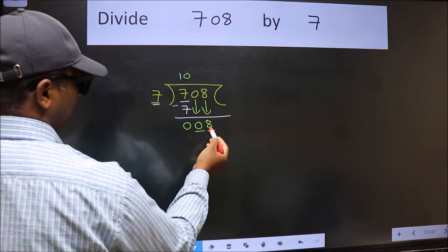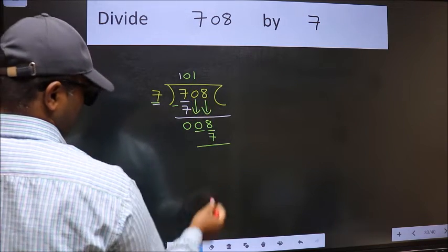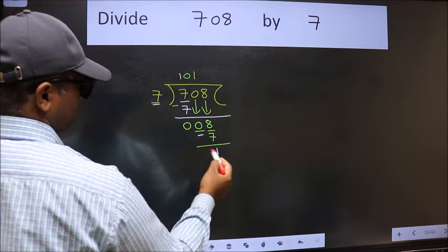Now 8. A number close to 8 in 7 table is 7 once 7. Now we should subtract. We get 1.